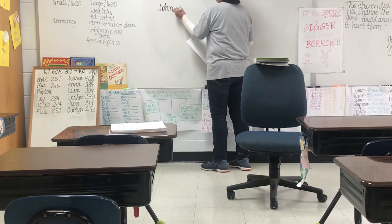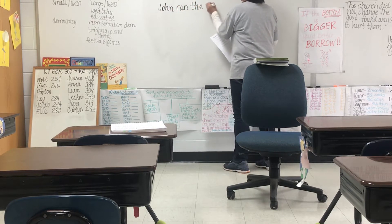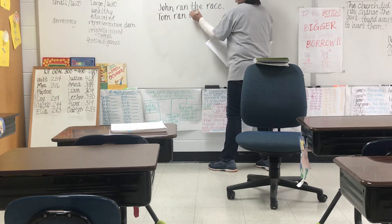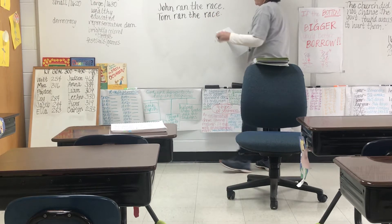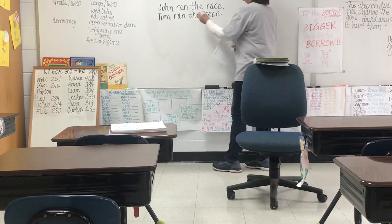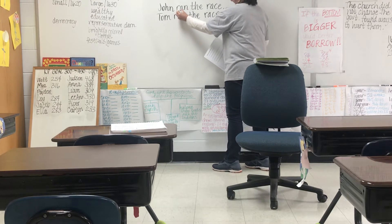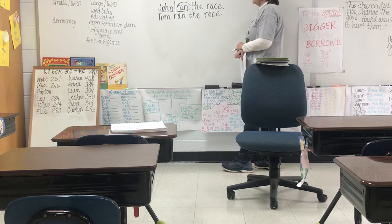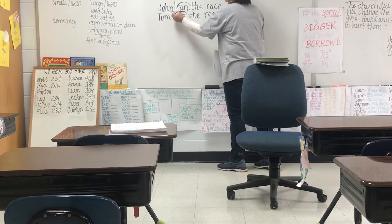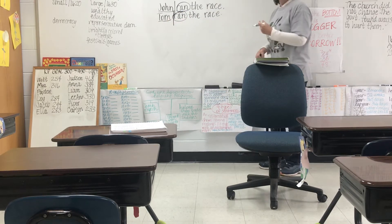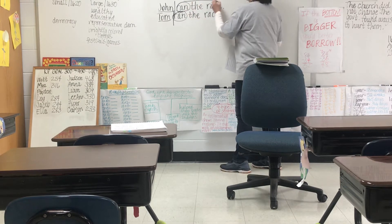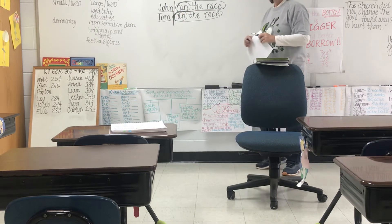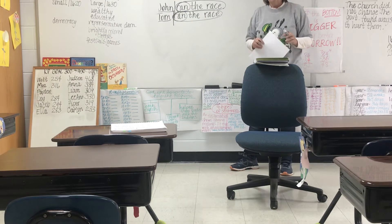John ran the race. Tom ran the race. In the first sentence, my predicate part is 'ran the race' and my verb is 'ran.' My subject is John. In the second sentence, my verb in the predicate part is also 'ran,' and my subject is Tom. The interesting thing about both sentences is that the complete predicate is the same. The difference is that one has a subject of John and one has a subject of Tom.